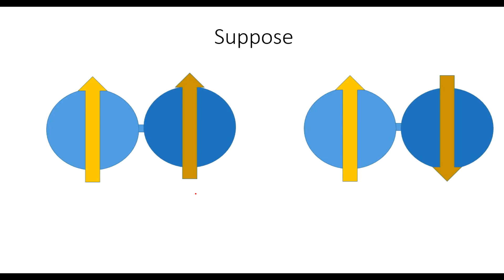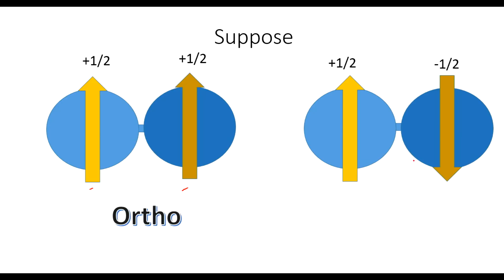This figure shows the ortho and para hydrogens. I have colored one nucleus darker to distinguish their positions. In the first case, both nuclei have +½ spin — this is ortho hydrogen, having the same spin. In the second case, the spins are +½ and −½ — this is para hydrogen, having opposite spins.